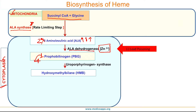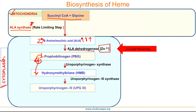In the next step, four molecules of porphobilinogen (PBG) condense to form hydroxymethylbilane, or HMB, catalyzed by uroporphyrinogen I synthase. HMB is then converted to uroporphyrinogen III (UPG3) in the presence of UPG3 synthase.